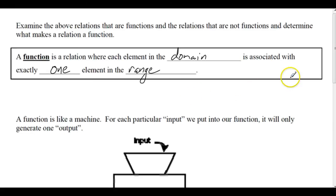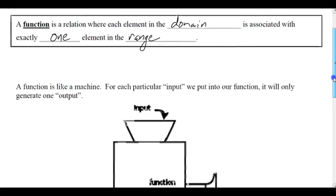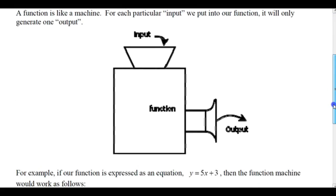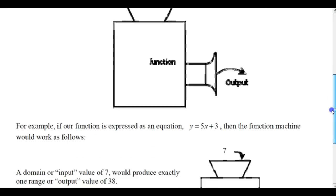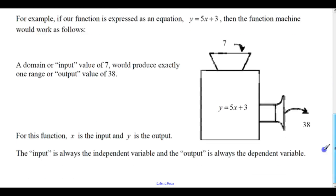Now, functions like a machine, for each particular input we put into our function, it will only generate one output. So drop a number in, turn the crank, which is hidden, it's on the other side, and out comes some output. For example, if our function is expressed as an equation, y = 5x + 3, then the function machine would work as follows.